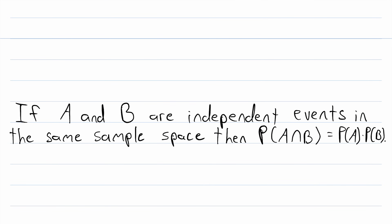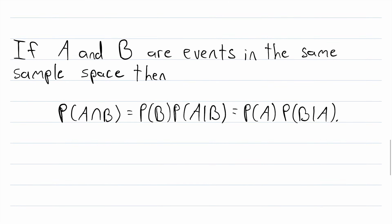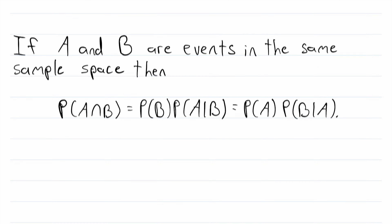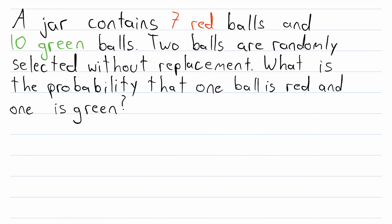So that is the multiplication rule of probability. It tells us how to find the probability of the intersection of events by multiplying some probabilities together, which of course is how it gets its name. And before we go, I'd just like to leave you with an example to try on your own.